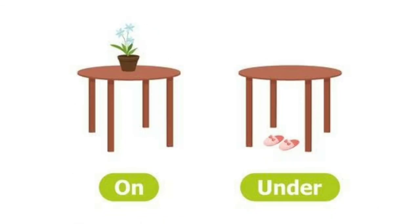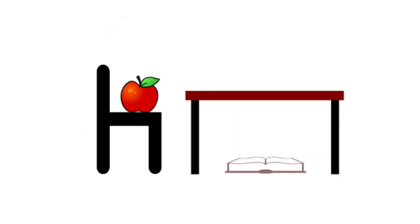In this picture, the flower board is on the table and the center is under the table. Now children, look at this picture carefully — tell me which object is under the table. Very good, the book is under the table. And tell me which object is on the chair. That's right — an apple is on the chair.